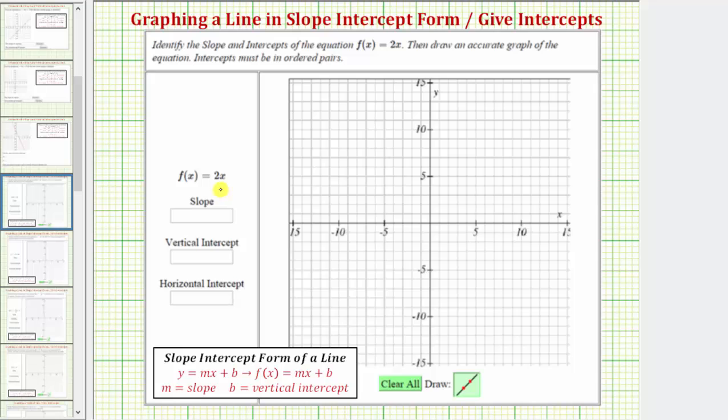The first thing to recognize is the linear function is in slope-intercept form, which is the form f of x equals mx plus b, where m is the slope and b is the vertical intercept.